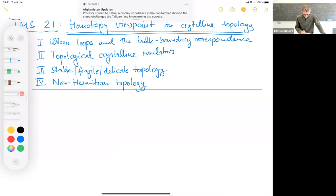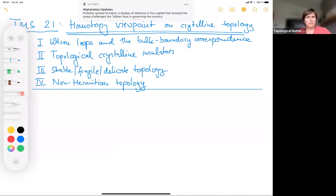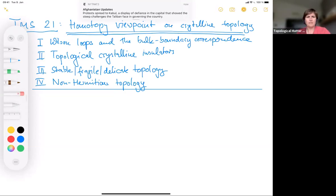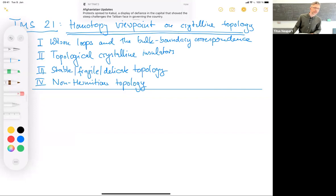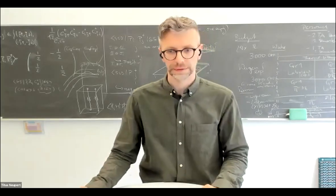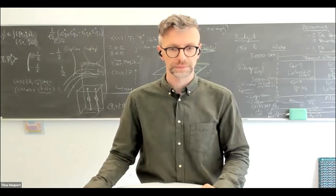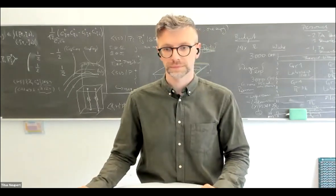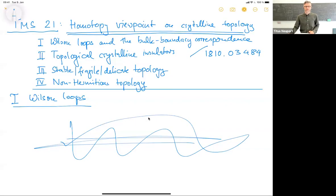Let's talk about Wilson loops — that's section one. There was a technical issue: the screen was frozen and participants could not see what was being written. After stopping and restarting the screen share, writing became visible again.